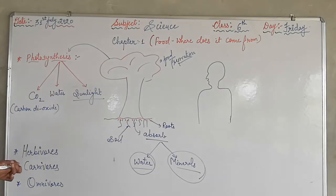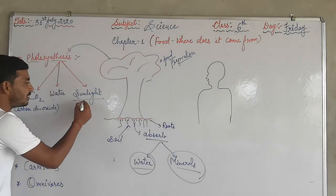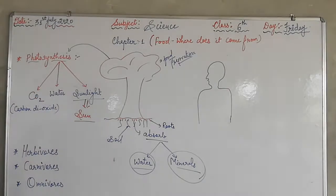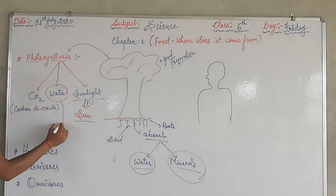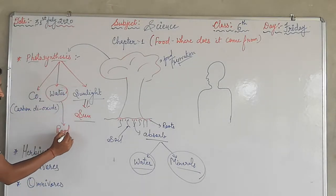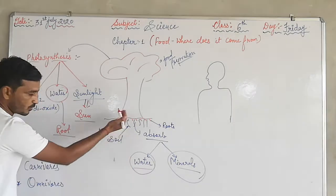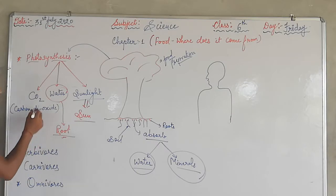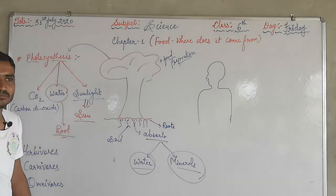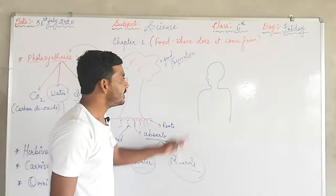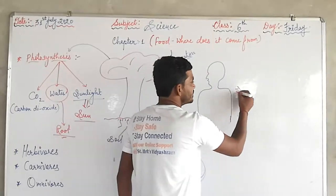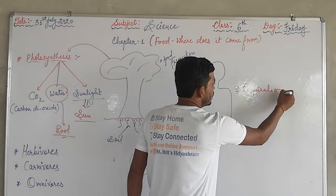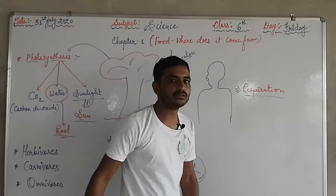Let's talk about how each of these elements is obtained. From the roots, we get water. Now, where do we get CO2 from? When we talk about the respiration system — when we breathe, what do we take in?